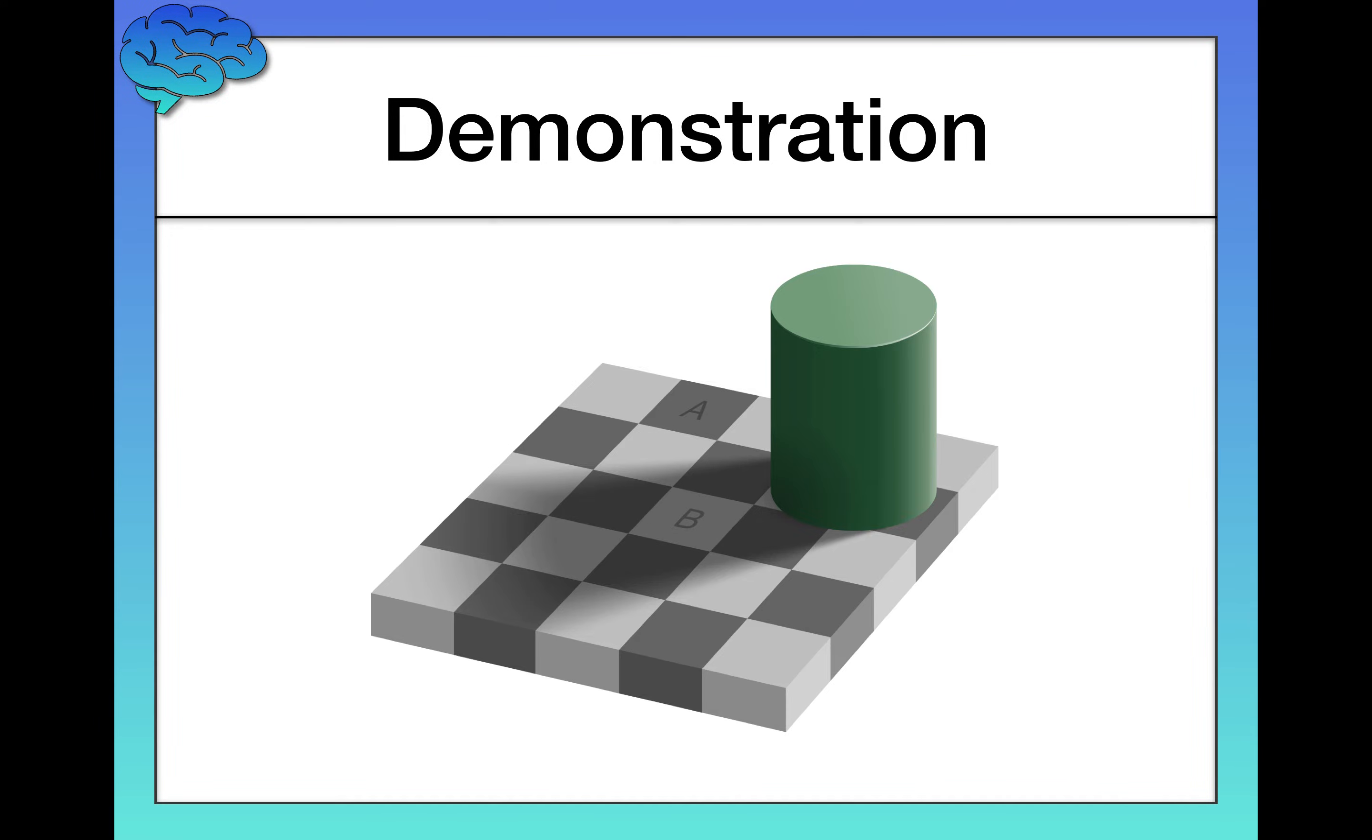Again, I'm not playing any tricks. I'm not changing A or B. But essentially what's happening is your brain is using the contextual information.